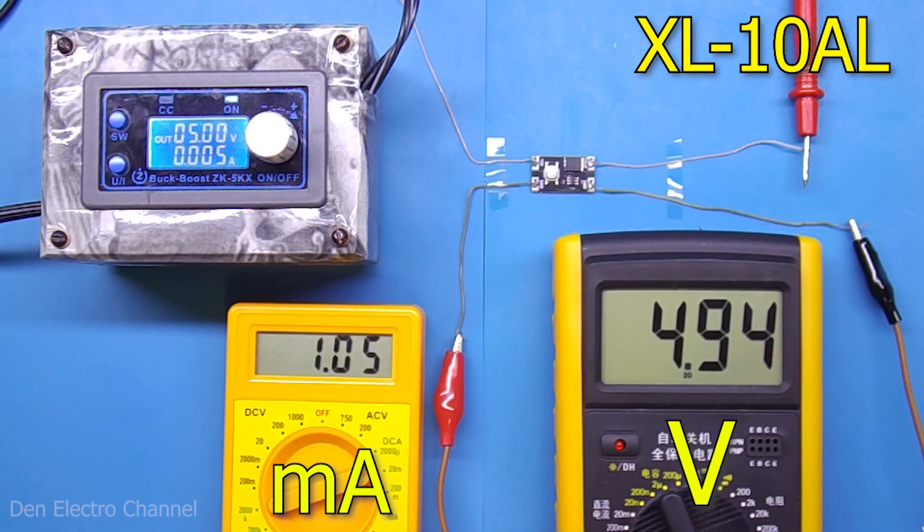It was possible to measure the current only in the ON state. For this low voltage module, it is 1 milliamp. It consumes this current for its work. No output load. Once the shutdown button is pressed, the output voltage slowly begins to drop. This only happens when there is no load. Apparently, this is a discharged capacitor.